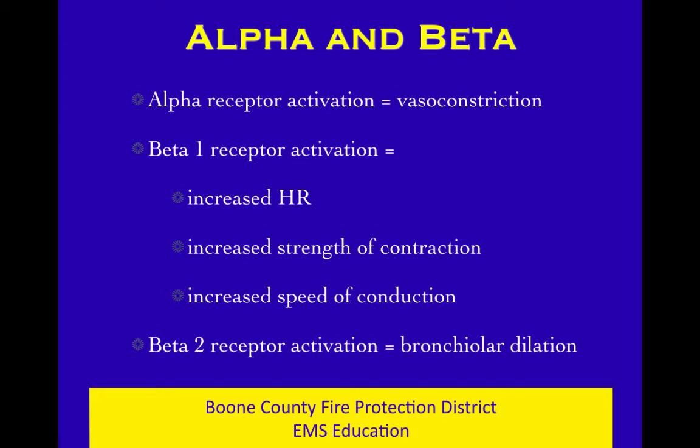There are alpha and beta receptors: alpha receptors, beta-1 receptors, and beta-2 receptors. If you activate an alpha-1 receptor, it causes vasoconstriction. There are receptors on blood vessels that, when activated by an alpha agonist, cause vasoconstriction — and you can guess that an alpha blocker would prevent vasoconstriction. The quick and easy way to remember beta receptors: beta-1 works on the heart, because you have one heart. Beta-2 works on the lungs, because you have two lungs.